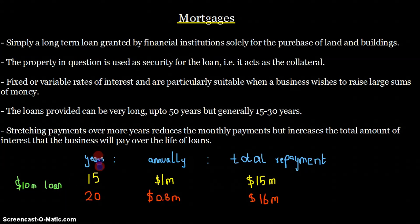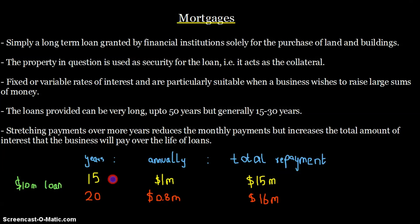For example, if we took a 10 million dollar loan for buying a building: over 15 years you pay 1 million annually, giving a total repayment of 15 million dollars. Alternatively, if we increase the duration to 20 years, the annual payment drops to 0.8 million dollars but the total repayment rises to 16 million dollars. So your total repayment increases but your annual amount decreases. These are rough figures to illustrate the concept. That's it — thanks for watching and Allah Hafiz.